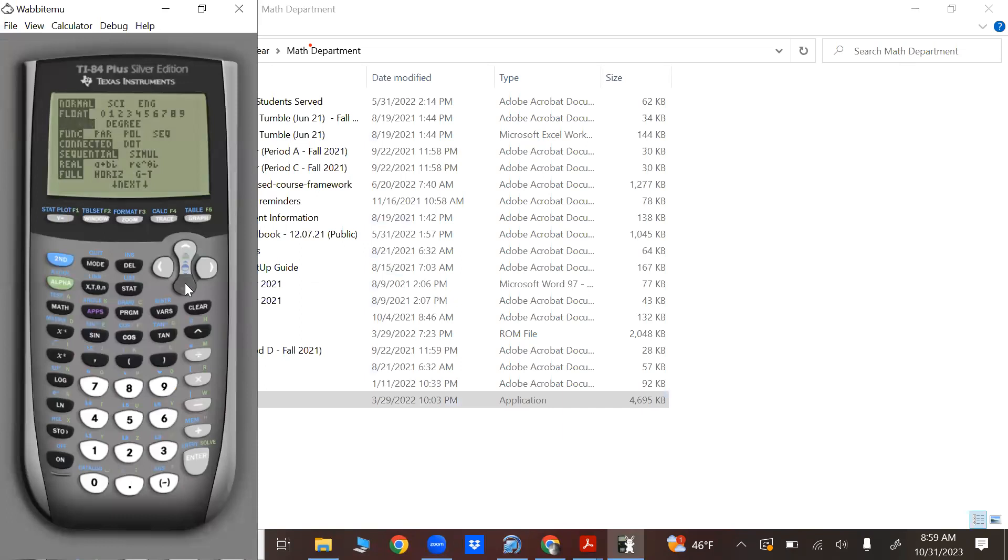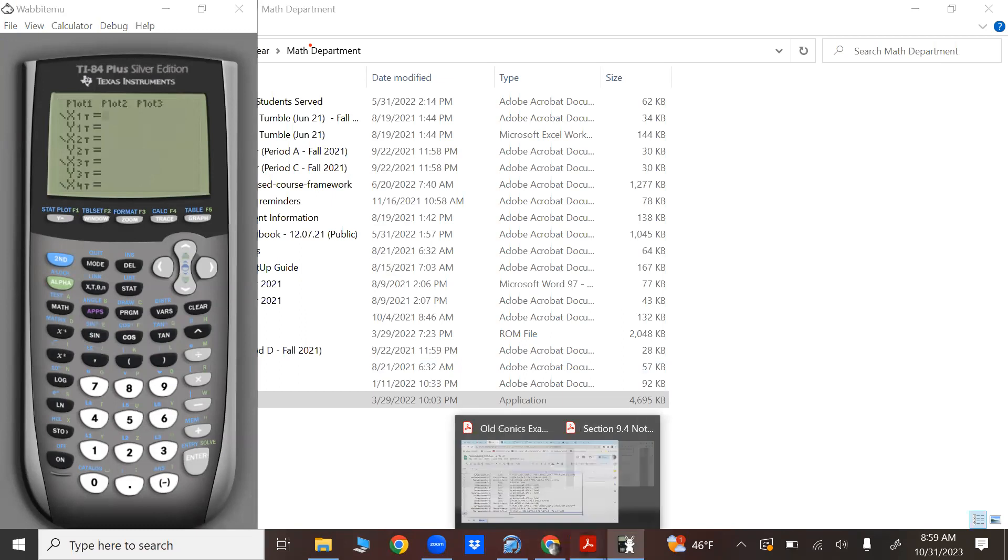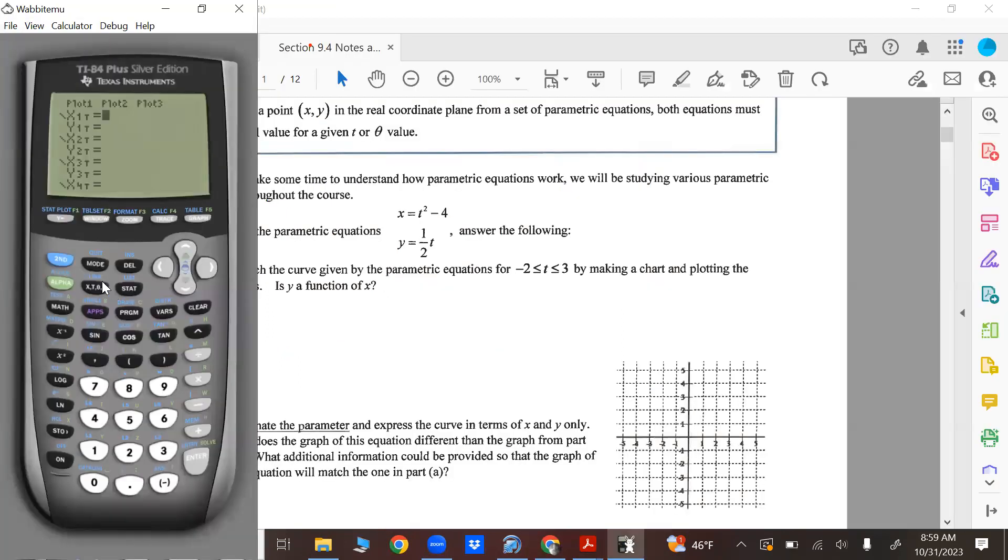Okay, so if you go to mode, the fourth line there, switch to par. There you go. There's par. And my short-term memory is terrible. What were the equations again? T squared minus four. So you go where X is, and it puts T on the back. It's T squared minus four. And is the other one half T? So I'll put 0.5 T. Yeah, there we go. Now, when you graph it, you could graph in the center window, see what happens.